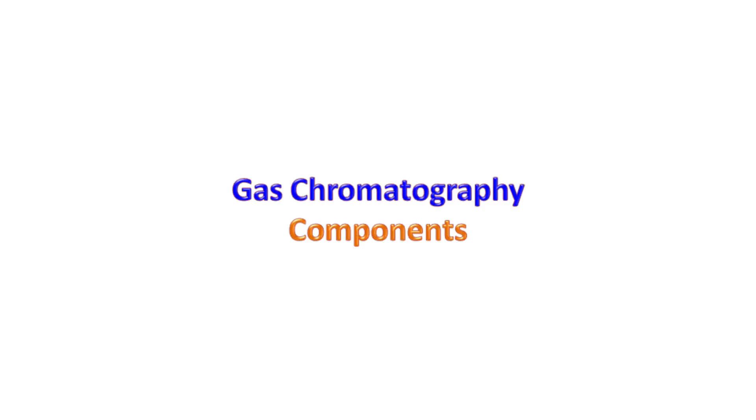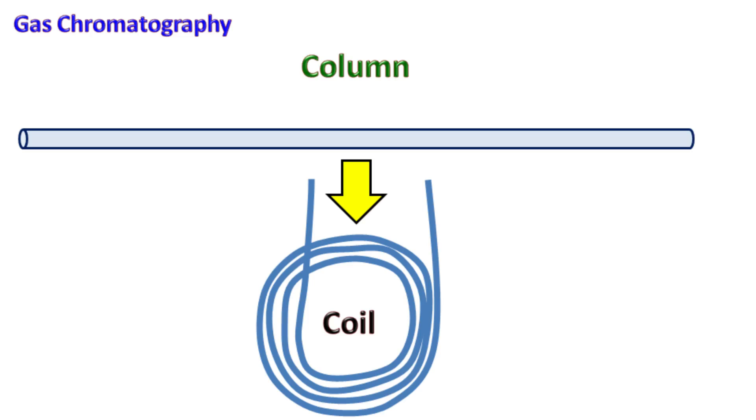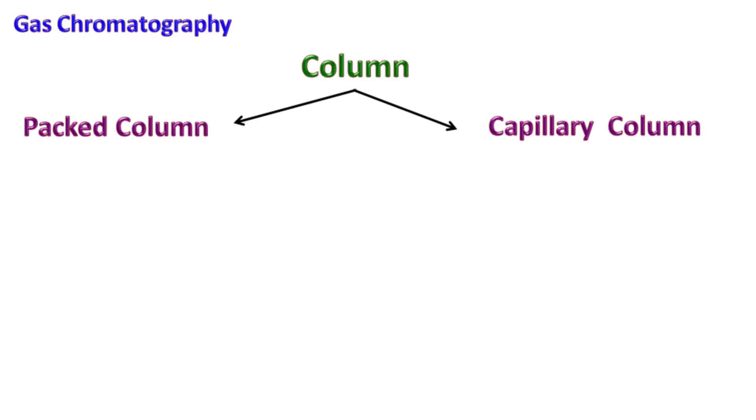Let's see the components of gas chromatography. The column. The column used in gas chromatography is very long and arranged in a coil. The column used in gas chromatography are of two types: number one, packed column, and number two, capillary column.